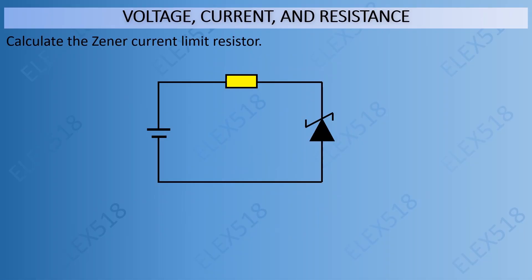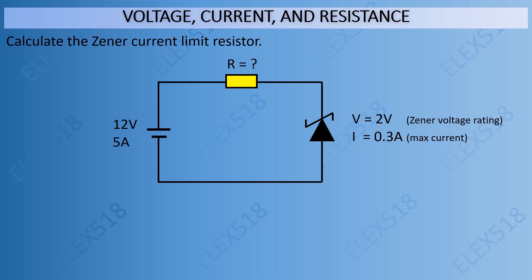Here is the simple calculation of a zener limit resistor. It is very important to calculate the resistor value to avoid over-current flow that can damage the zener. For example, we have a voltage source of 12 volts at 5 amperes, a zener voltage rating of 2 volts, and a zener maximum current of 0.3 amperes. We have to calculate the correct resistor to limit the current flow, using the formula: voltage source minus zener voltage rating, divided by zener maximum current.